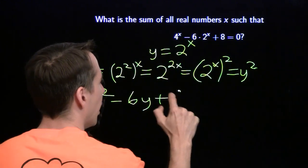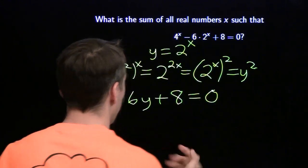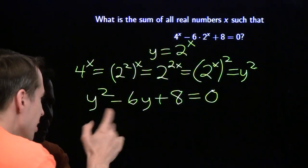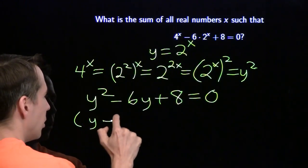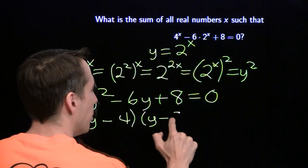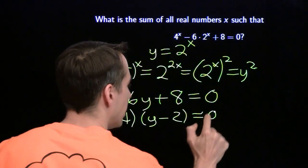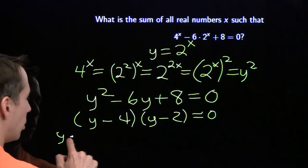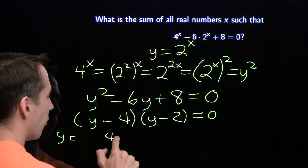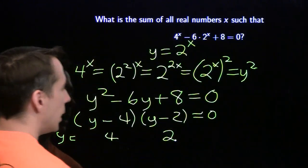Not only do we have a quadratic, it's a pretty easy quadratic. We can factor this, y minus 4 times y minus 2. So that gives us our solutions for y are 4 and 2.